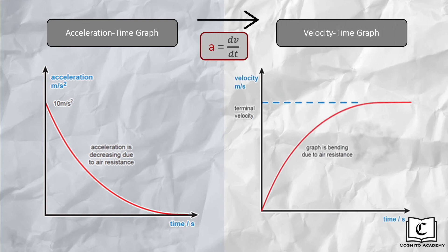With the acceleration-time graph, let's next draw the velocity-time graph on the right, using the idea that acceleration is the gradient of the velocity-time graph. At the start, we can see that the initial acceleration is the highest, hence gradient for our velocity-time graph at the start is the steepest.